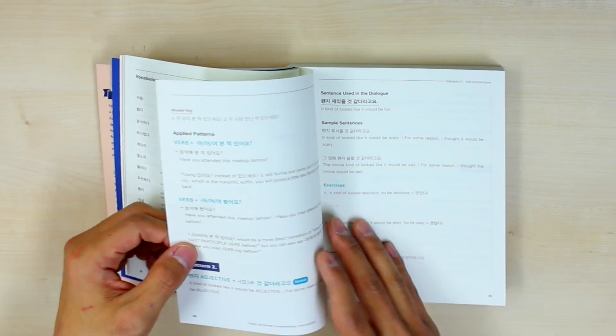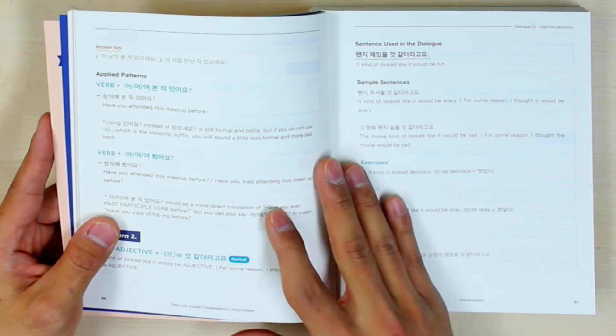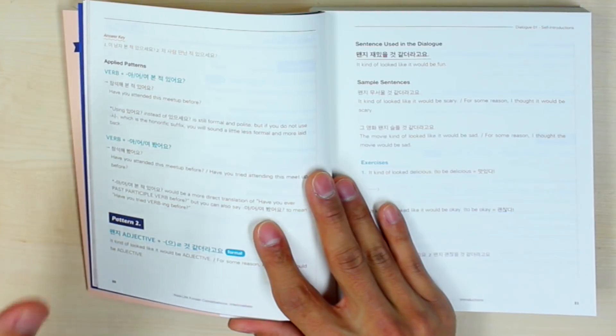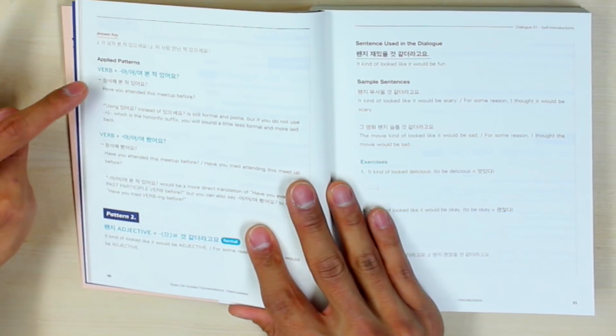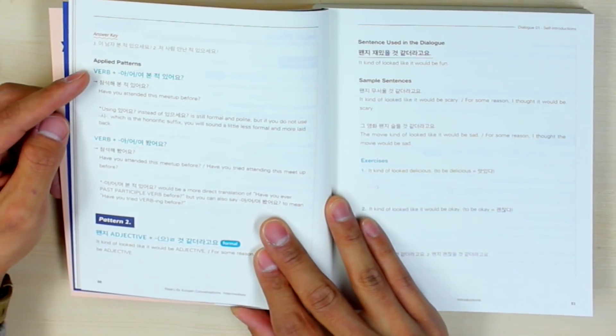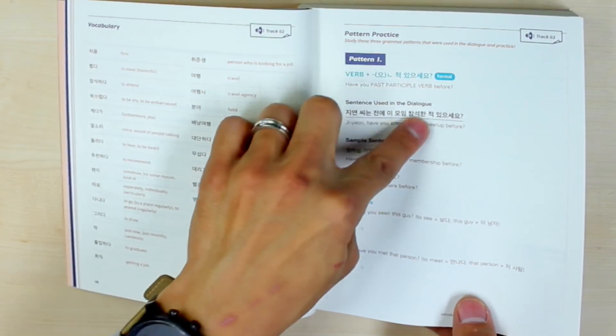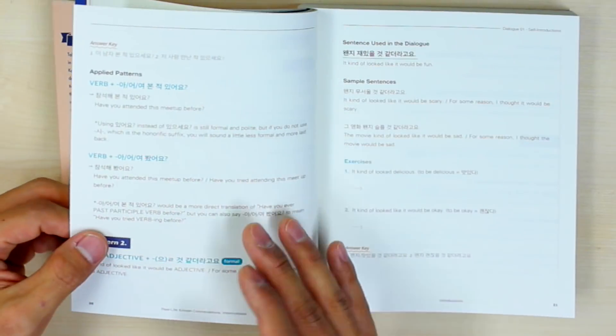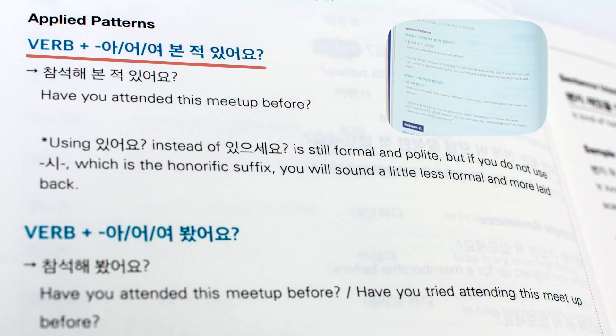And of course, 은 적 있으세요 is not the only way to say have you ever done something before. There are applied patterns. And if you love learning languages, and if you've gotten used to the fact that you have to learn various types of sentence endings and various patterns to actually make your Korean or English or whatever language you're learning more flexible, you will love this feature. So applied patterns means this one is the main key sample sentence structure that we introduced in this dialogue. But there are variations that can mean the same thing. So instead of asking, 본 적 있으세요? You can also ask, 본 적 있어요?